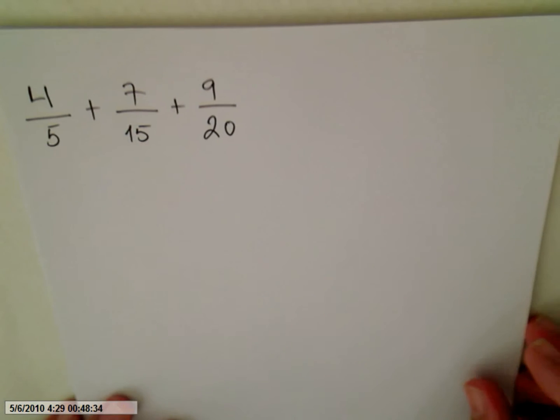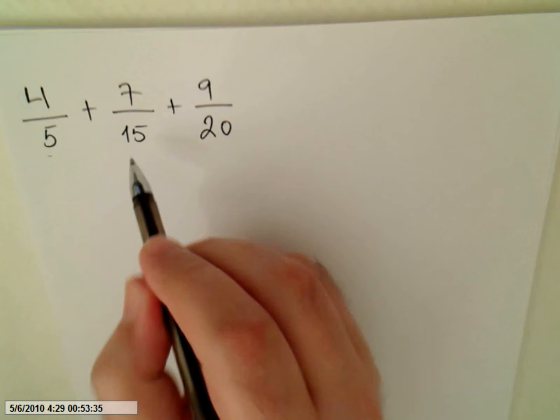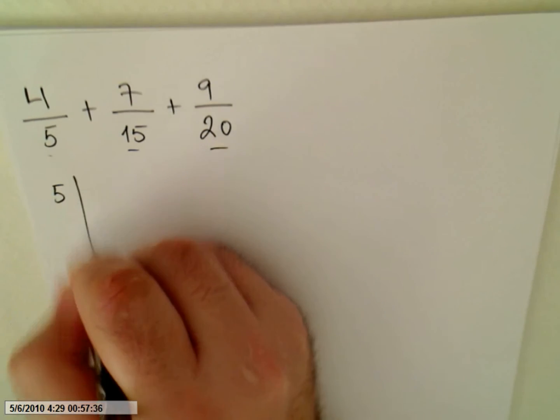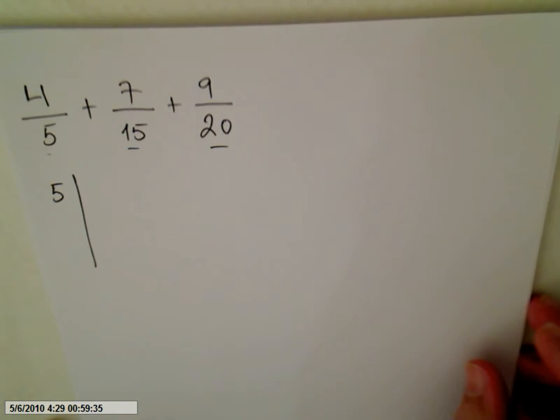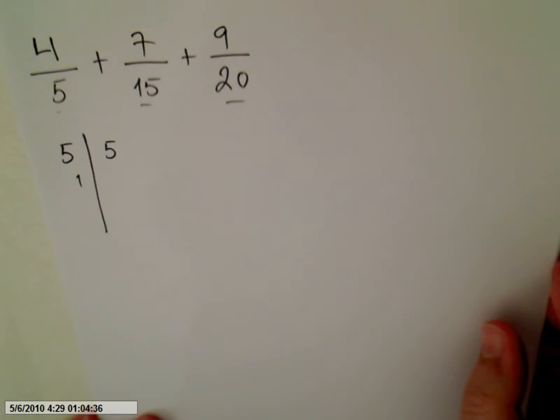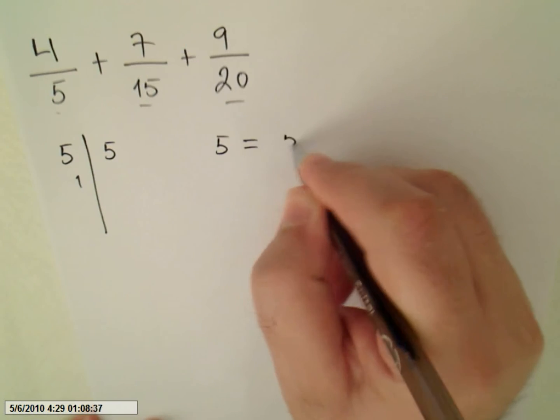Let me explain this. Our denominators are 5, 15, and 20. So if we prime factorize 5, 5 divides 5 equals 1. Done. So 5 equals 5.